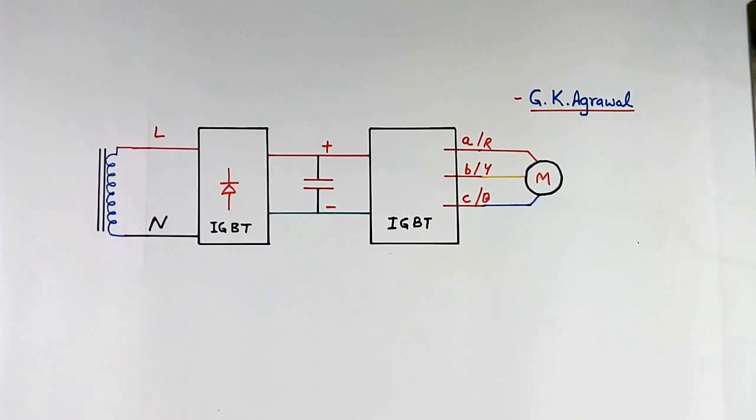This is 3 phase motor which is connected to wheel to run the train. And there will be many motors, not only one. I have shown only one here.